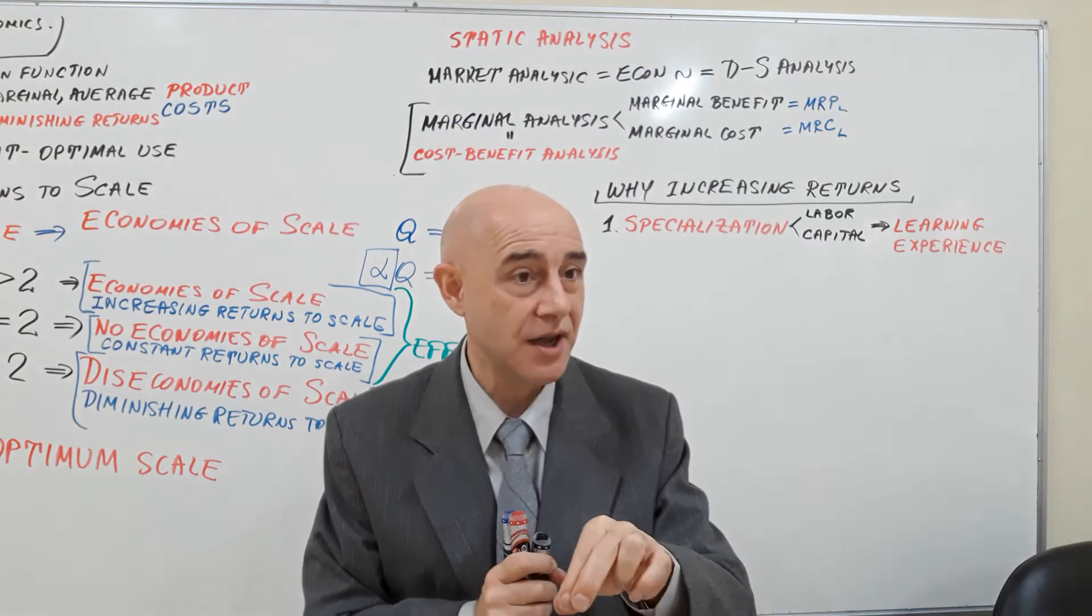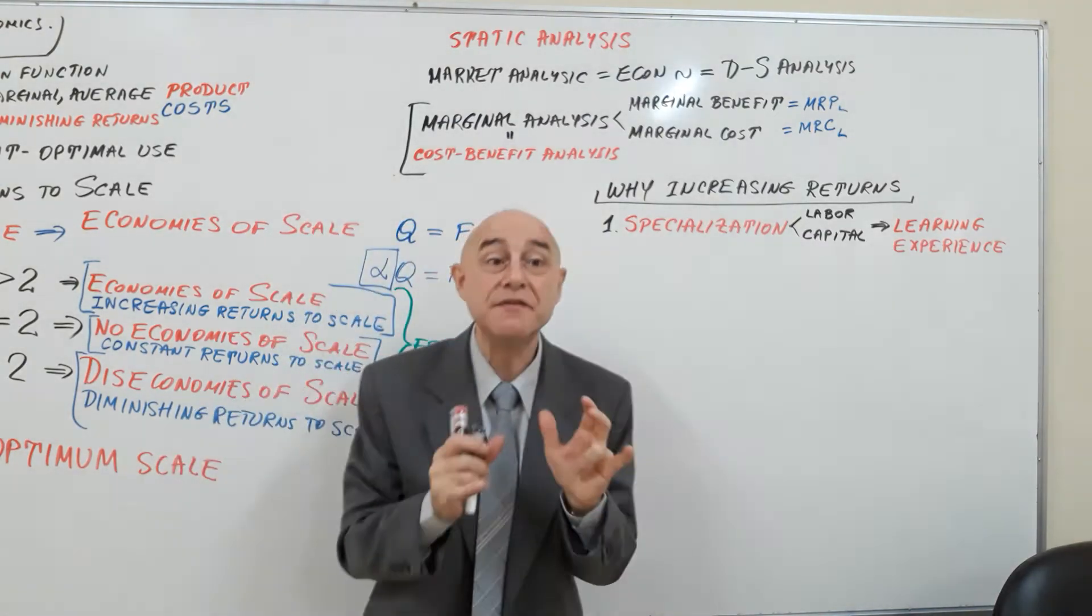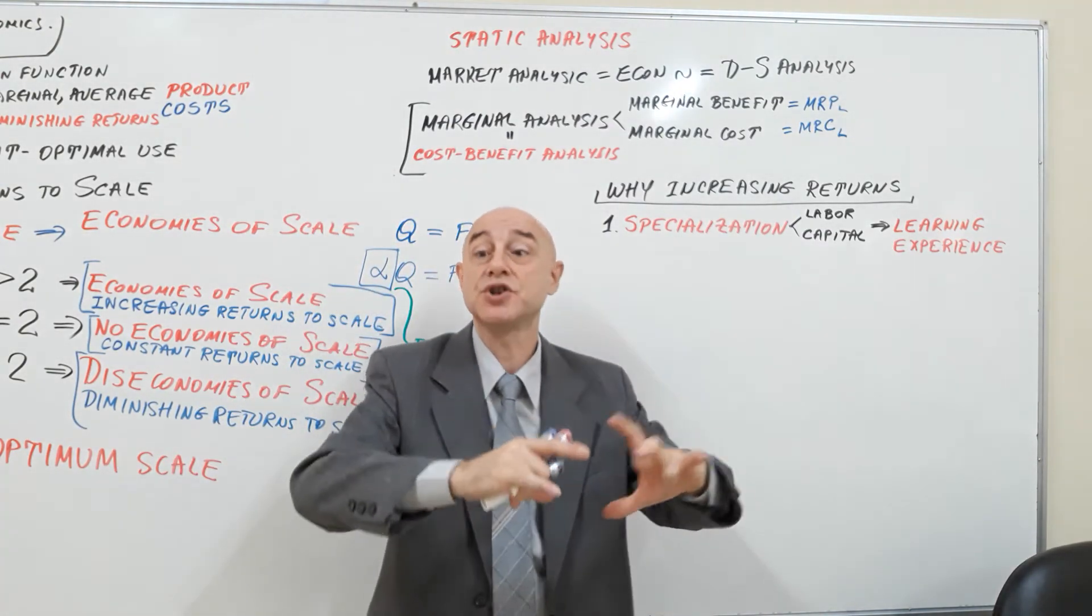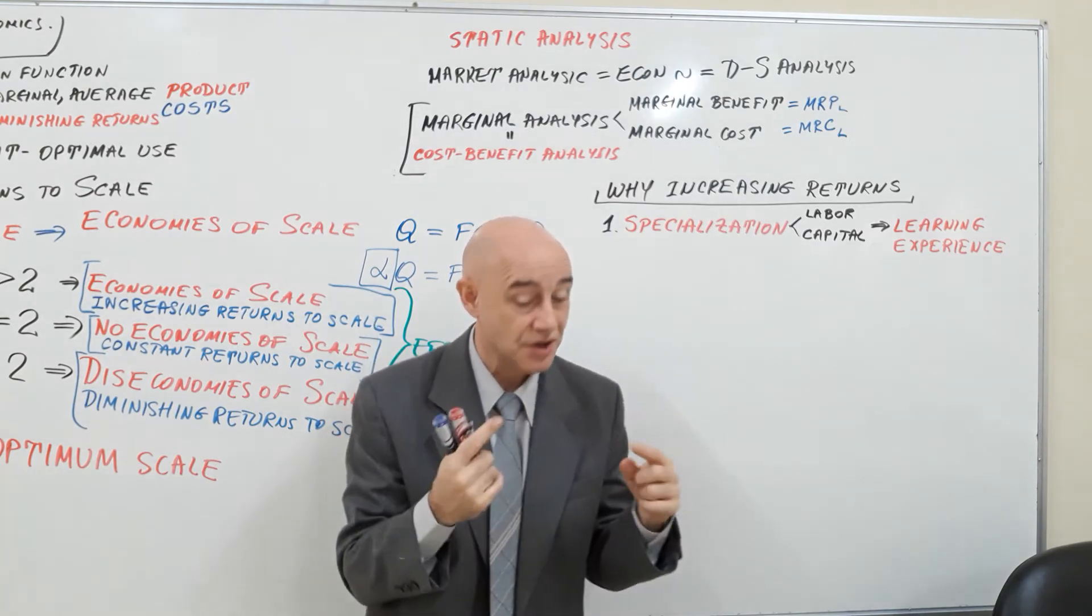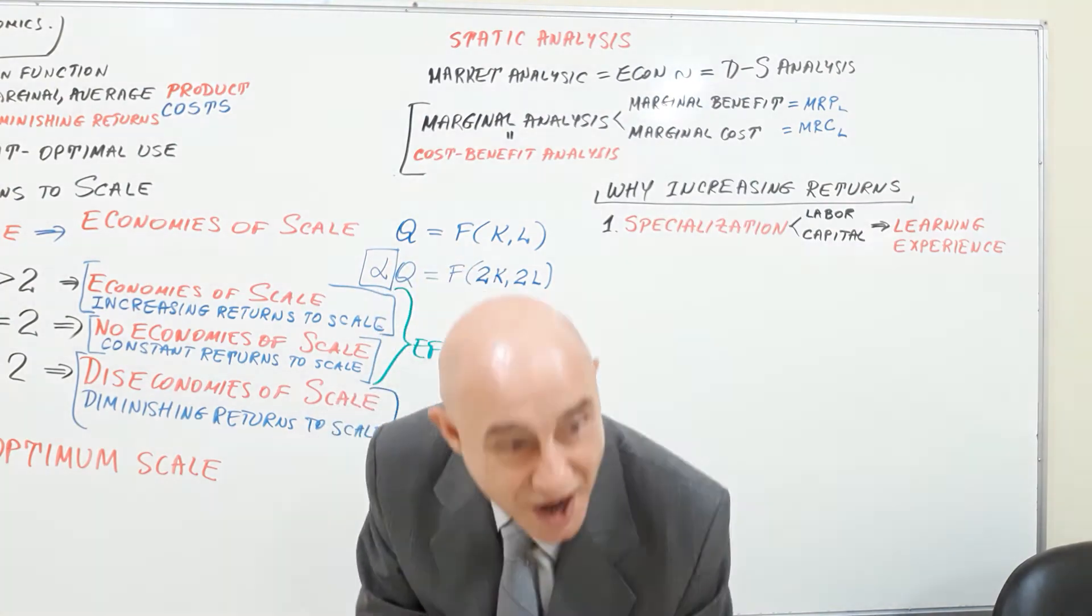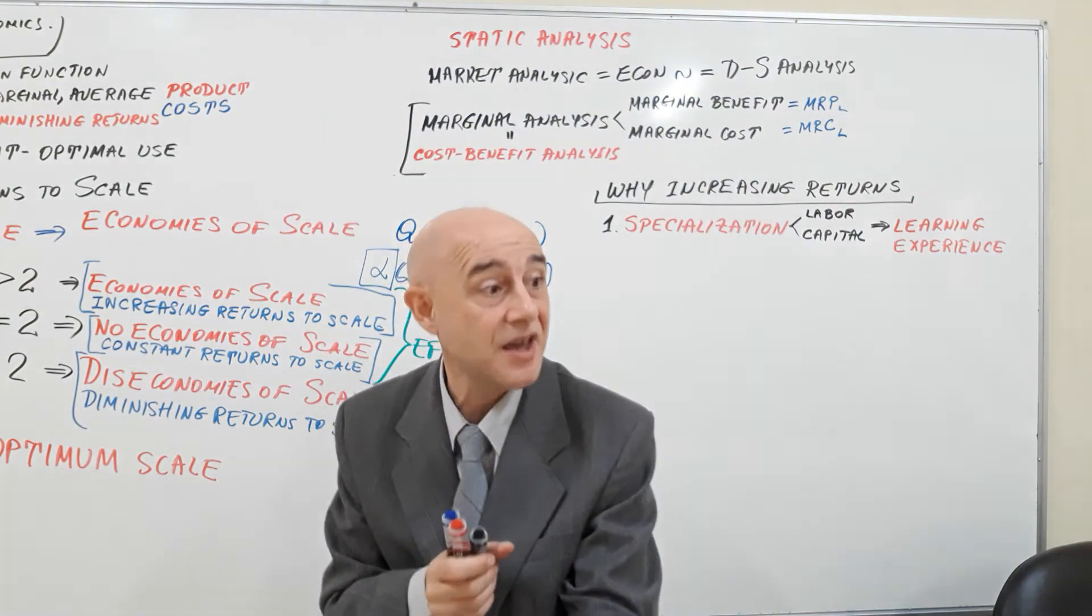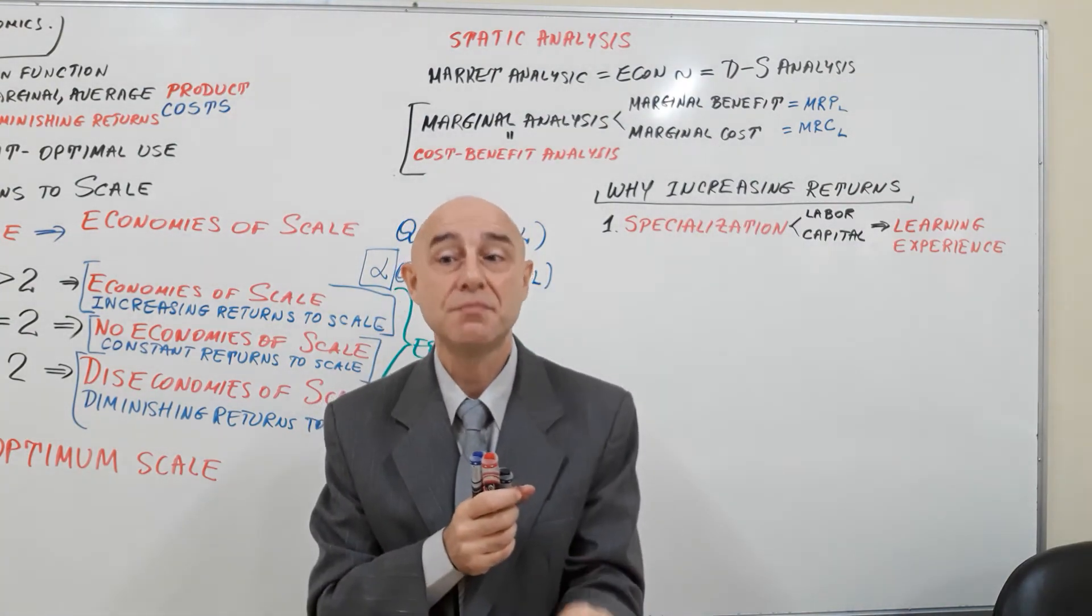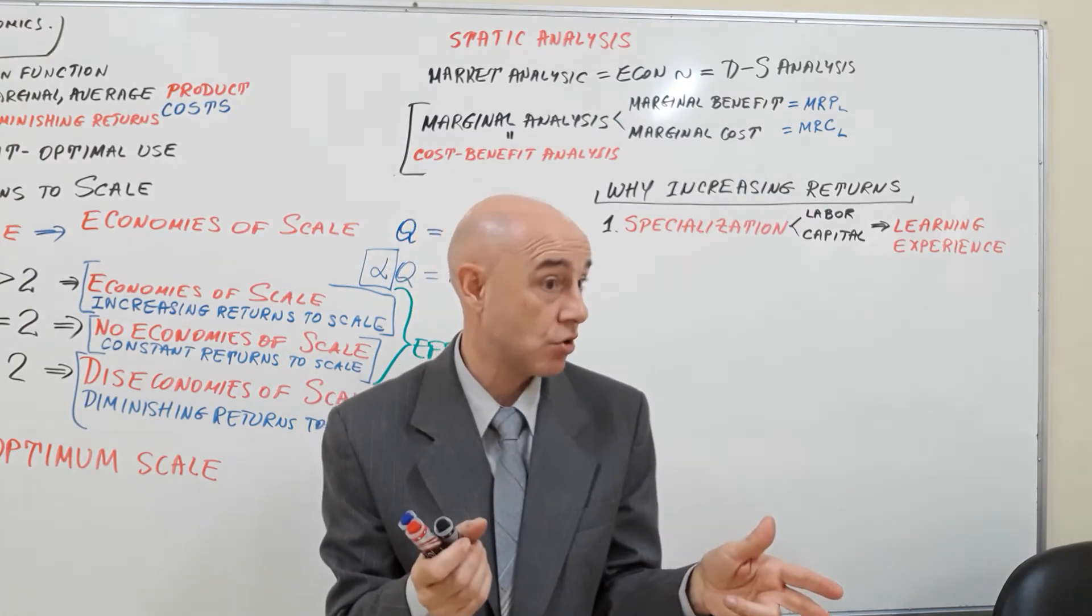For example, if you have accounting departments, one person in accounting will do only accounts receivables. Another person will do only cash. A third person will specialize only in salaries, salary payouts. So you will have, even though you have accounting which specializes in accounting, within the accounting you're going to have each person specializing in his own little thing, let's say salary payment, we'll call it payroll.